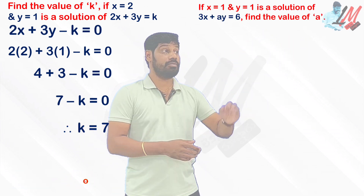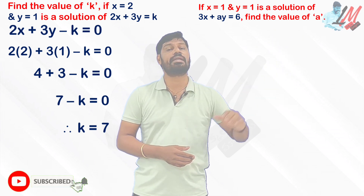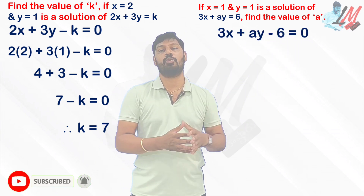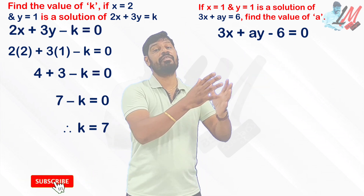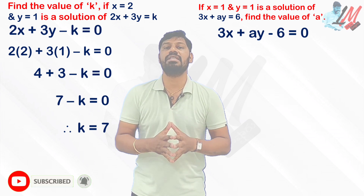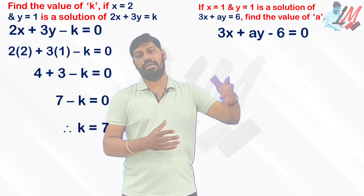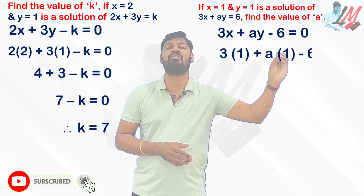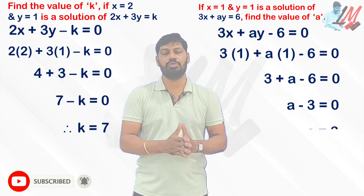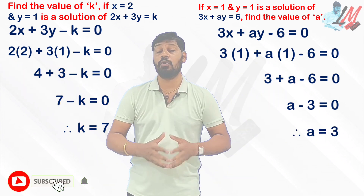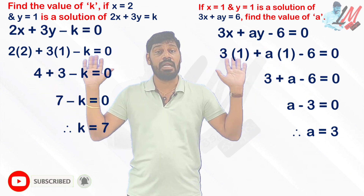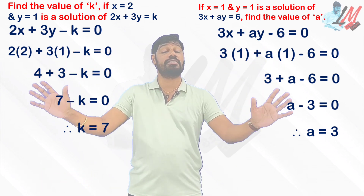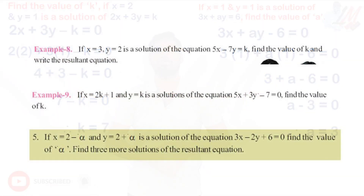For example: 3x plus ay equal to 6. Transposing 6: 3x plus ay minus 6 equal to 0. Given that x equal to 1 and y equal to 1 is a solution of this equation — find the value of a. Simply substitute x equals 1 and y equals 1 into the equation, then calculate the value of a. This is a very important model in our textbook, with 4 to 5 different problems of this type. Practice them to become experts.